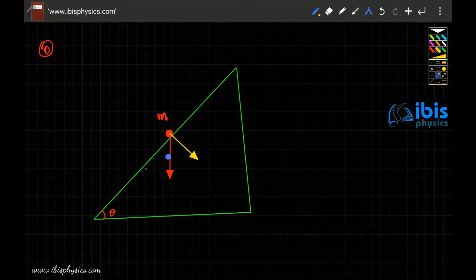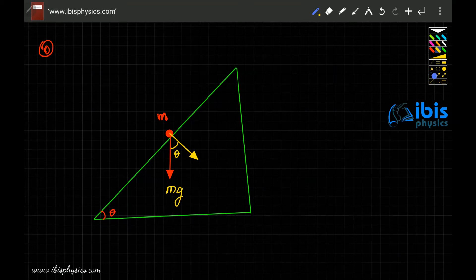One force, if this angle is theta, we know for sure that this angle is theta. The force if the mass is M, the downward force is mg. Now this mg can have two components. One is along the inclined plane, one is perpendicular to the inclined plane.